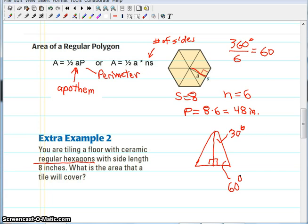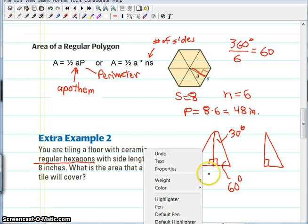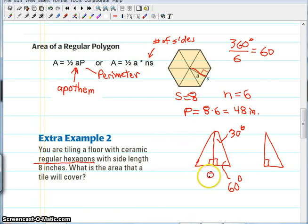So since we know the side length is 8, I'm going to just redraw one more time. So this half of this triangle, if this whole side length of the triangle is 8, then each piece of this is going to be 4. So we have a 4, and we have an apothem that we're trying to find.